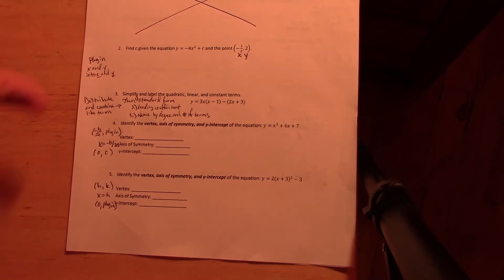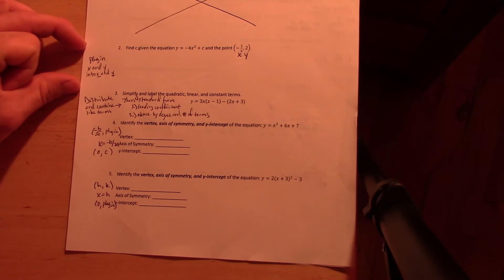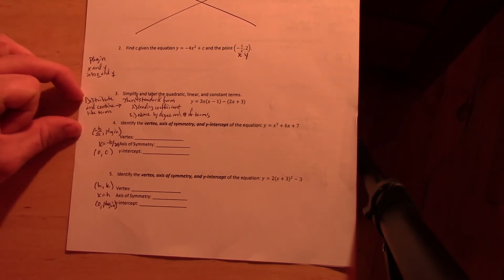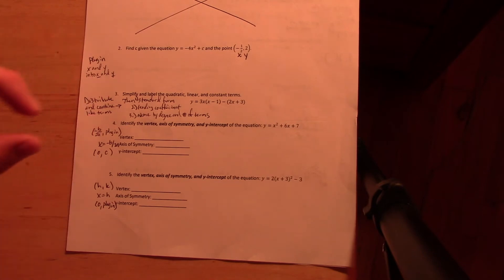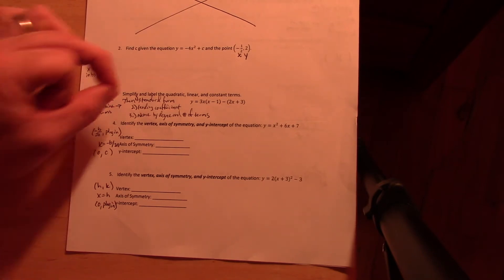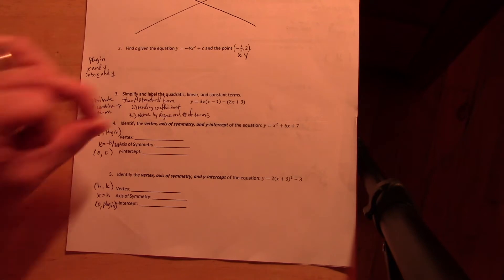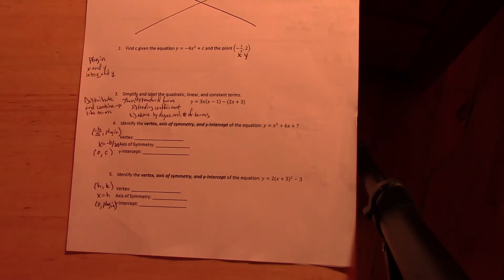What you can see here for page one: you can see plug in X and Y, and index and Y. Standard, distribute, combine like terms here. And then on the test you're actually going to have to put it in standard form, tell me the leading coefficient, and name it by degrees and number of terms. You'll see this on the second review shortly.